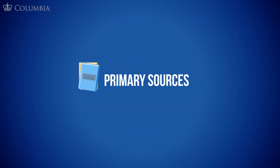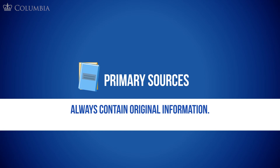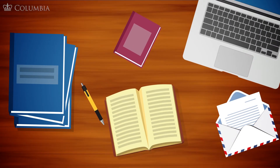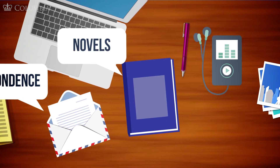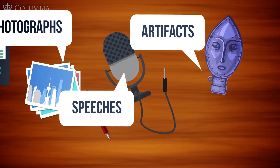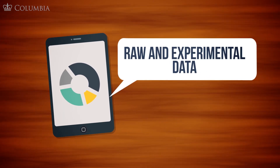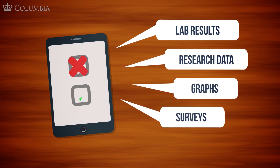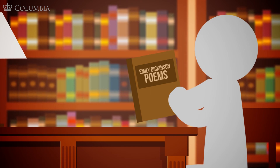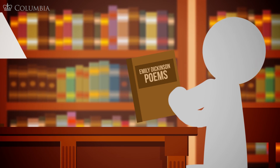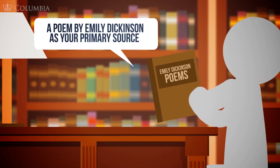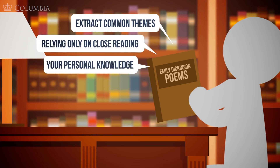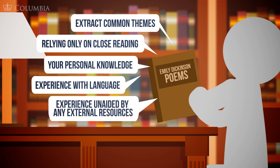Primary sources can be defined slightly differently in each discipline, but always contain original information. In the humanities, they are often first-hand accounts of specific events or historic periods, and can include correspondence, novels, music, photographs, speeches, and artifacts. In the sciences, they are often raw and experimental data, including lab results, research data, graphs, and surveys. Primary sources allow you to critique an original work through unfiltered eyes. For example, in the humanities, you can analyze a poem by Emily Dickinson as your primary source and extract common themes, relying only on close reading, your personal knowledge, and experience with language, unaided by any external resources.